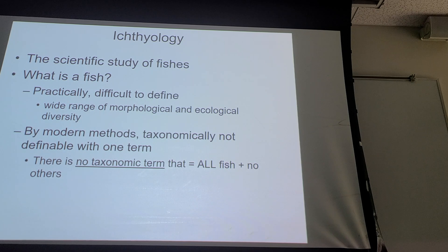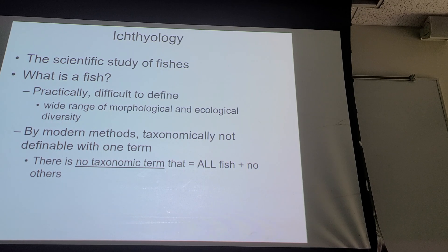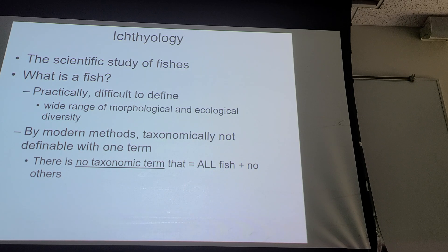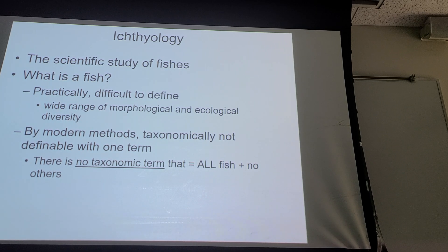Another way to describe what I just said is that there's no taxonomic term for fish. So if we think about our taxonomy, we've got categories. Can someone describe what a category represents in taxonomy? A category is a level of classification. You've got broad levels and very narrow levels.